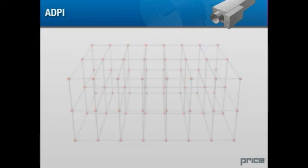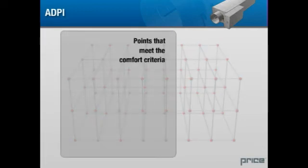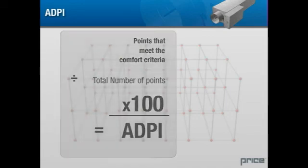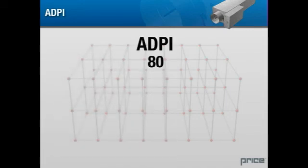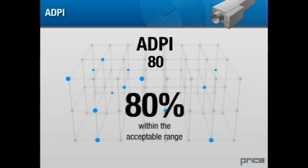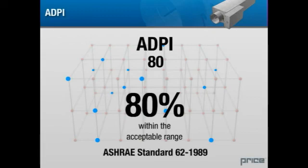This is a calculation of the number of points that meet the comfort criteria divided by the total number of points, times 100. An ADPI of 80 means that 80% of the points measured have air temperatures and velocities within an acceptable range. An ADPI of 80 or above is considered adequate to meet the comfort criteria according to ASHRAE Standard 62-1989.